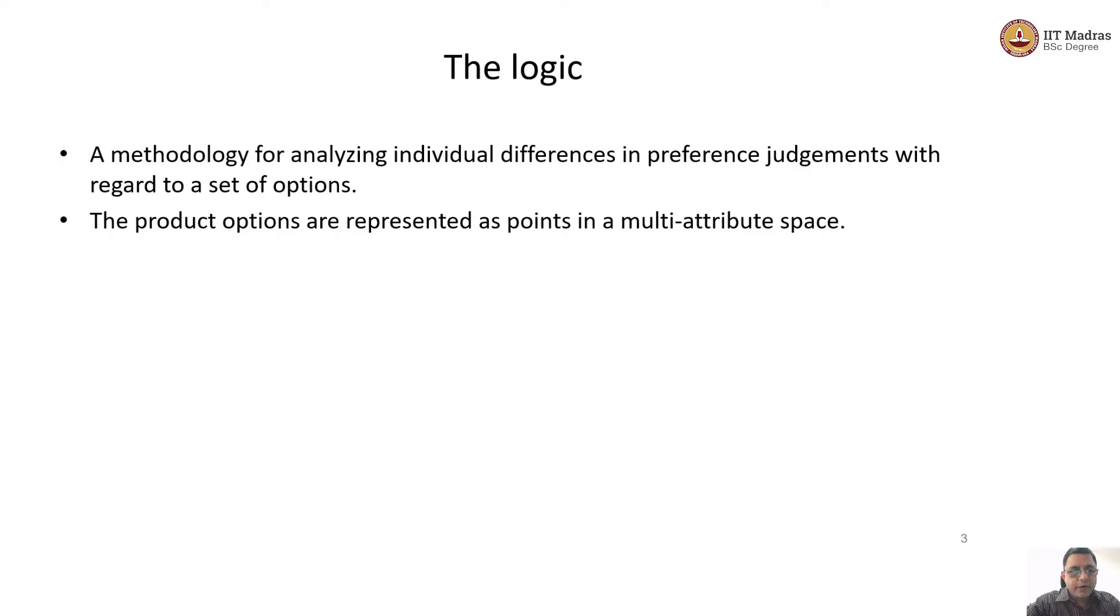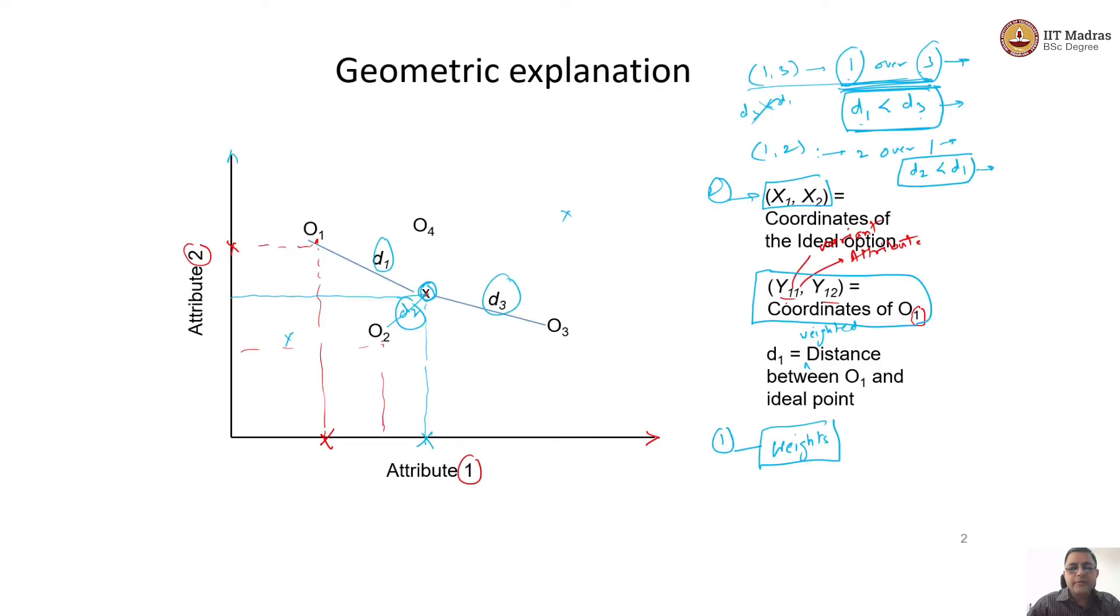Now what have we just now defined? Each product option is defined as a point in a multi-attribute space. We have explained the process on a two-dimensional data, on a two-attribute data.